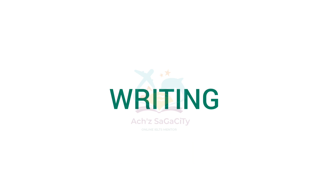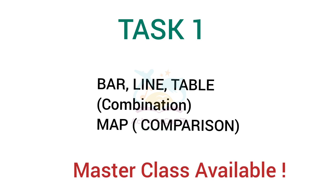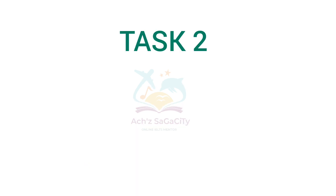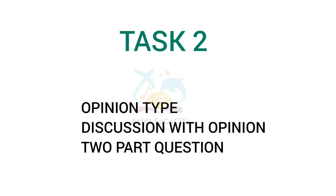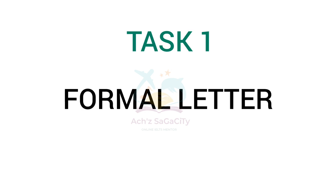Moving on to writing for academic Task 1: you can expect a bar chart, line chart, table, or a combination of any two. Also concentrate on maps — specifically a comparison or diachronic map showing the same place at different times. Master classes are available in our playlist. For Task 2, you can expect opinion type, discussion with opinion type, or a direct two-part question where you need to answer both parts. Be familiar with the updated structure.